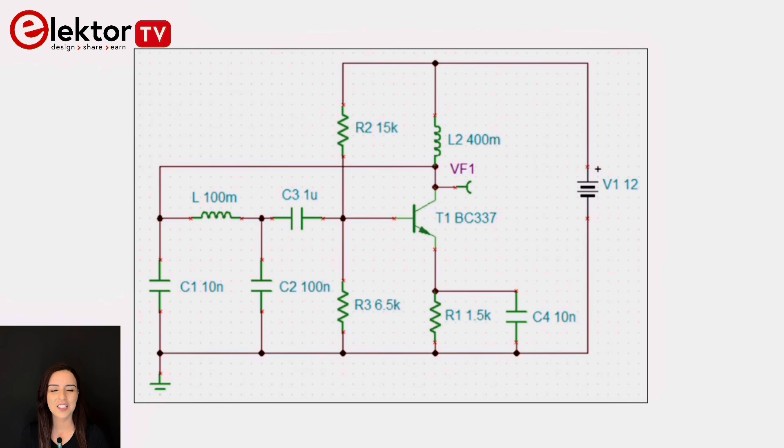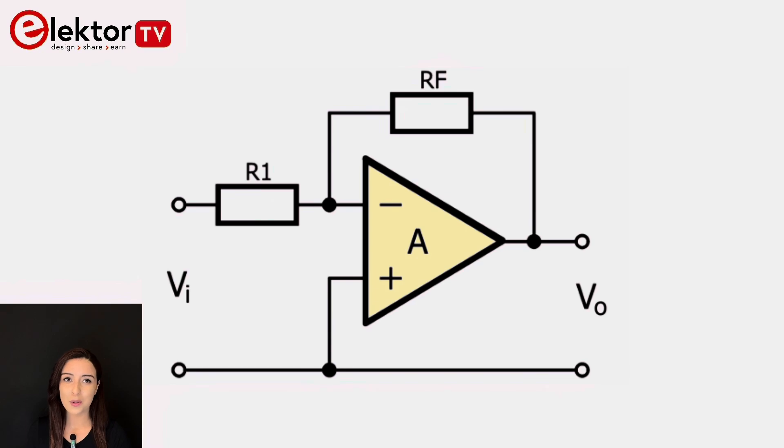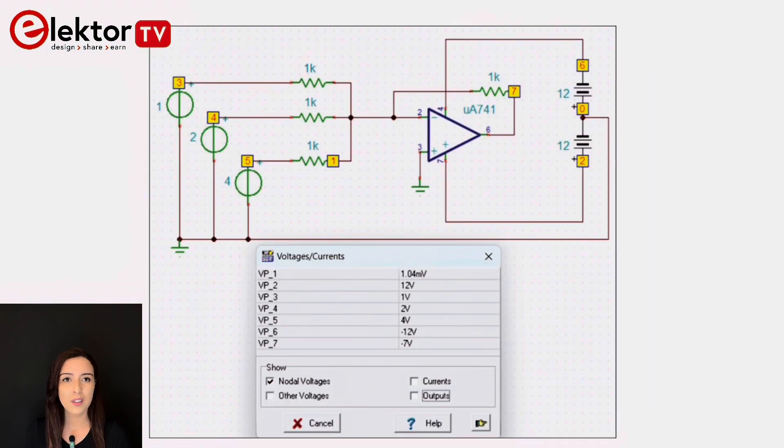Chapter six focuses on operational amplifiers, crucial for building circuits that require precise voltage control and amplification. You'll learn how to use op-amps for voltage amplification, filtering and waveform shaping among other functions.